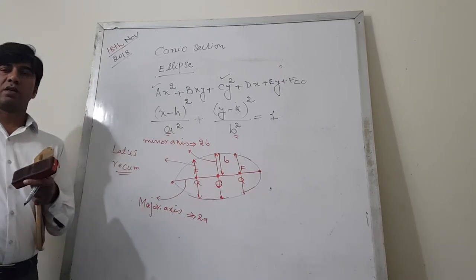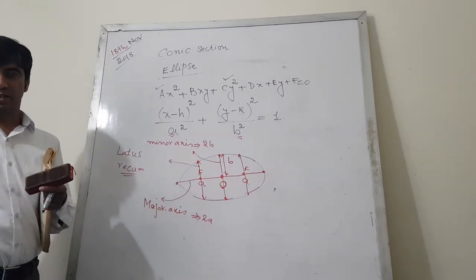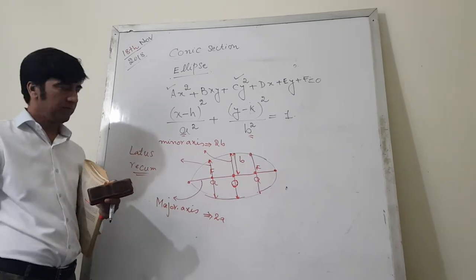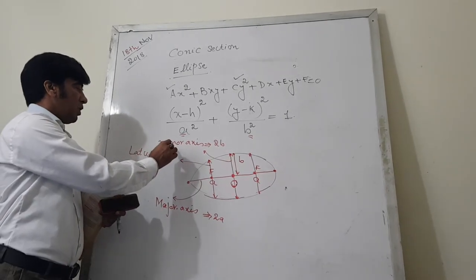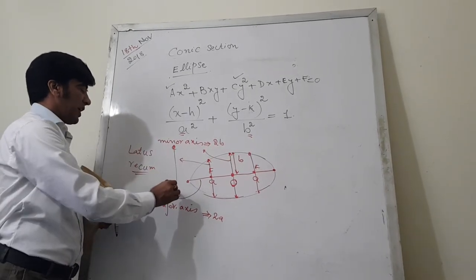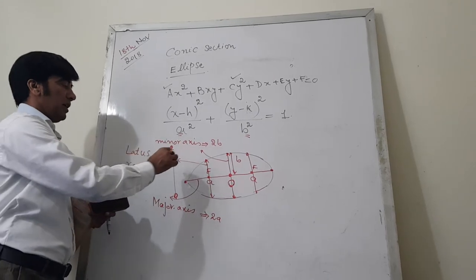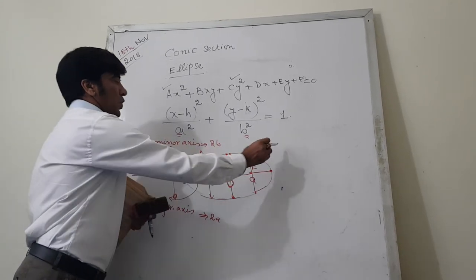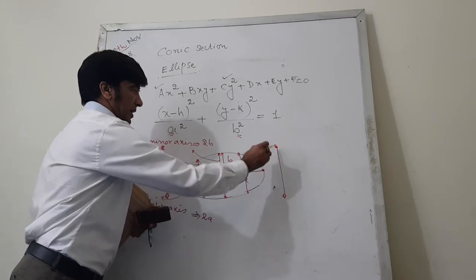And same is true for line of directrix. As you see in parabola there is only one line of directrix, but in case of ellipse you will have two lines of directrix.